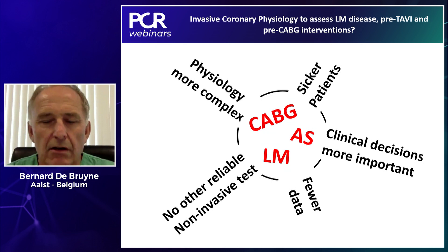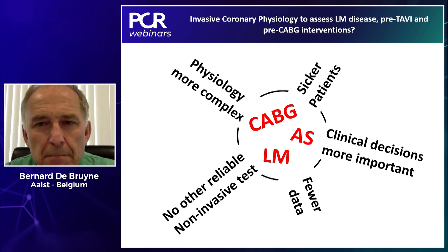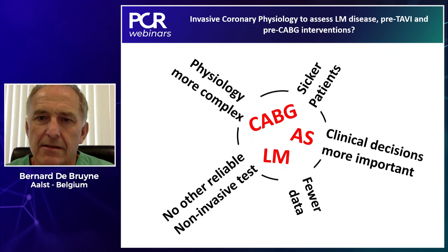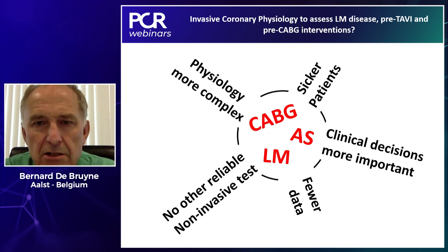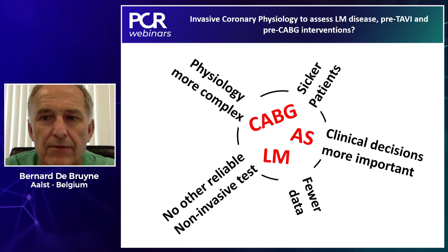We chose these subsets because, in contrast to the average patients with plain one or two vessel coronary artery disease with often intermediate stenosis, we are dealing with sicker patients in whom there are no other reliable non-invasive tests available to obtain real, reliable information about the severity of the coronary lesions. The physiological background is also more complex, there are obviously fewer data — very few randomized data — and in these sicker patients, the clinical decisions we have to take are really more important.